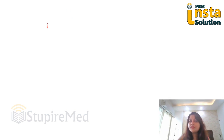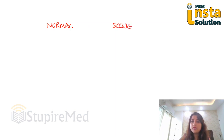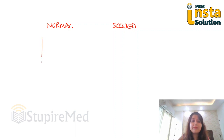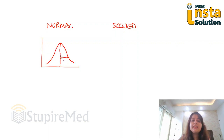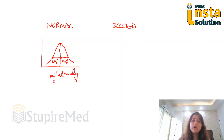Now usually there are two types of distributions that we have to study: normal distribution and skewed distribution. What is normal distribution? Normal distribution is represented by a bell-shaped curve. Whenever you draw a line in between, 50% of my values are exactly above the line and 50% of my values are exactly below the line. So this is bilaterally symmetrical.